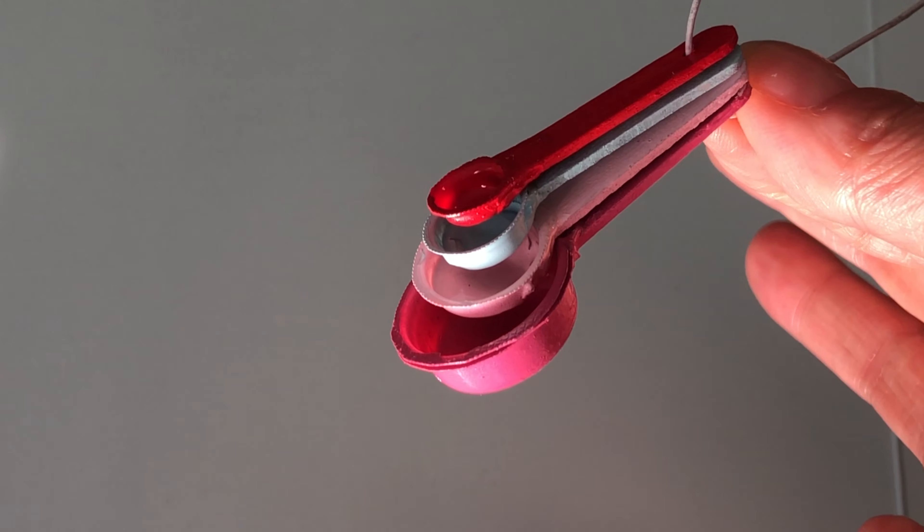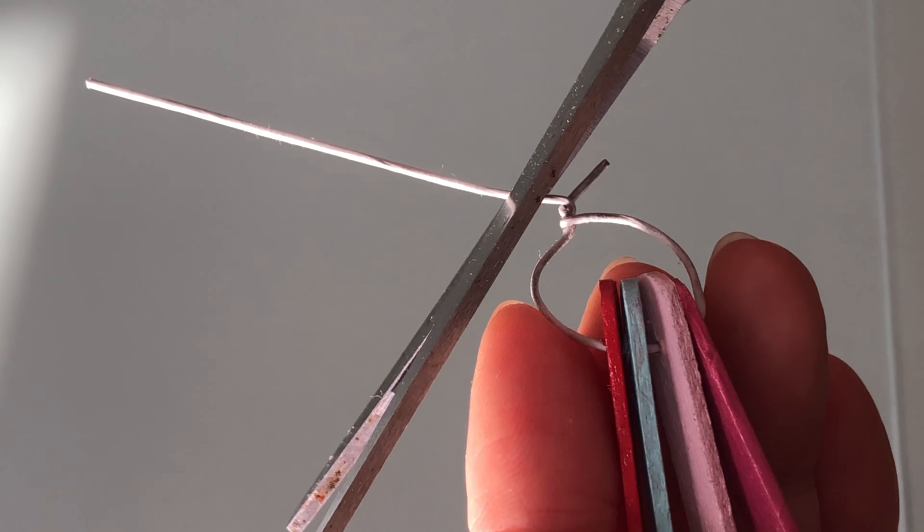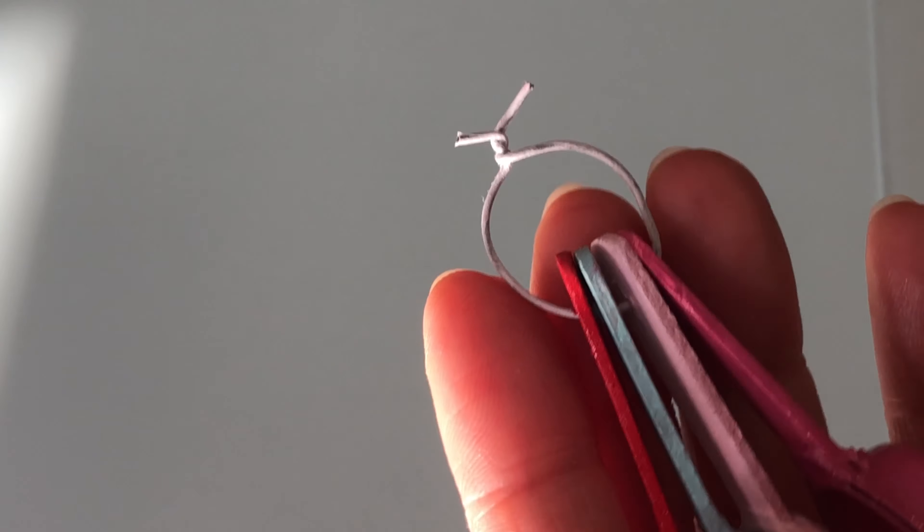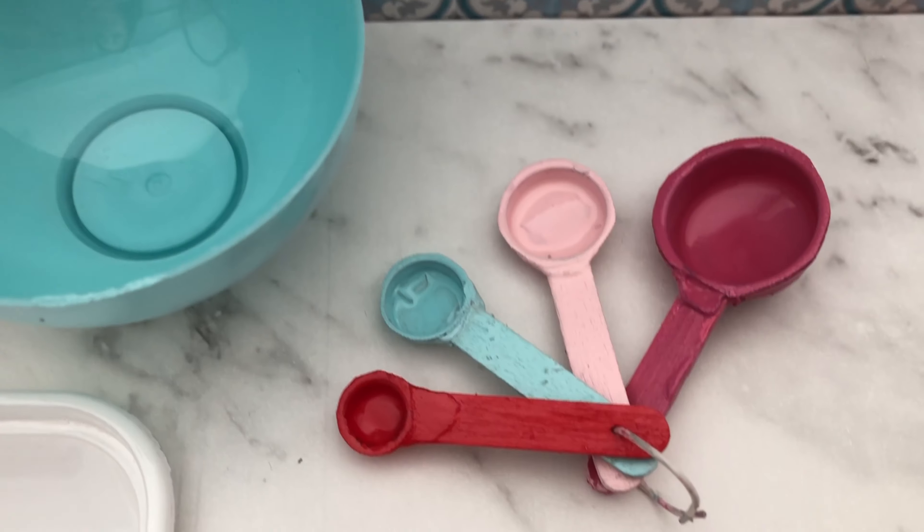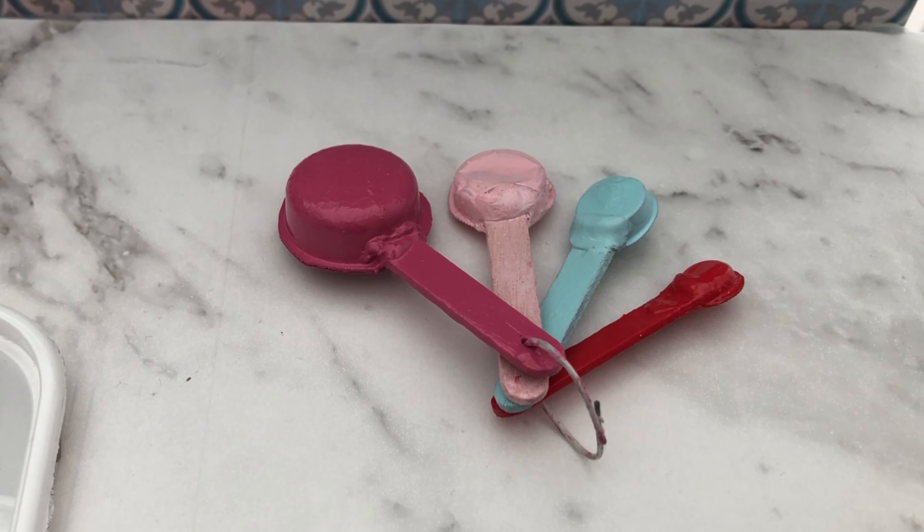With the spoons nesting inside each other, bend the wire into a ring, twist the ends closed and clip off any excess. These adorable doll sized measuring spoons are ready for use.